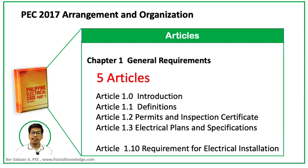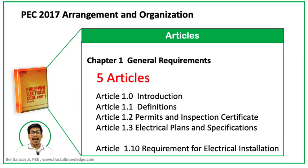Let us dissect the table of contents and see the content of a chapter. In Chapter 1, we have 5 articles: Article 1.0, 1.1, 1.2, 1.3, and 1.10. Notice the jump from 1.3 to 1.10 — this is normal, as it leaves room for future development where articles 1.4 to 1.9 can be added. The key point is the structure: under Chapter 1 we have 5 articles.